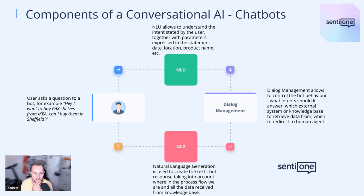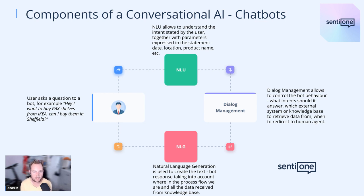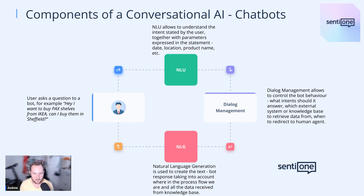Let's go deeper into the technology behind it. Here we have the components of conversational AI. A person asks a question; we feed that to a natural language model and then assign meaning to it based on what we've trained. So if we train it on, say, IKEA, we expect questions about IKEA — particular product names or IKEA store locations, for example. We use all those elements to bring together meaning and understanding, and then deliver a response via dialogue management.